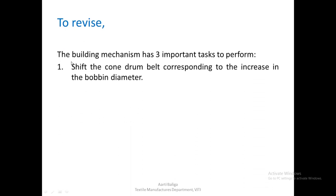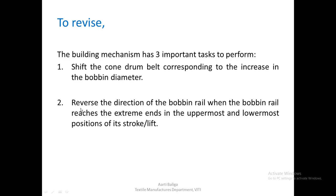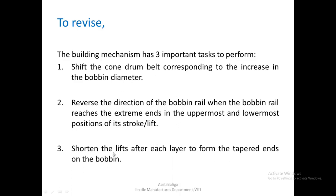To revise the entire lecture: the building mechanism has 3 important tasks. First, shift the cone drum belt corresponding to the increase in bobbin diameter. Second, reverse the direction of the bobbin rail when it reaches the extreme uppermost and lowermost positions of its stroke. Third, shorten the lift after each layer to form the tapered ends on the bobbin. These are the 3 important tasks the building mechanism has to perform, whether on the conventional or on the modern roving frame. With this we come to the end of this lecture. Thank you.